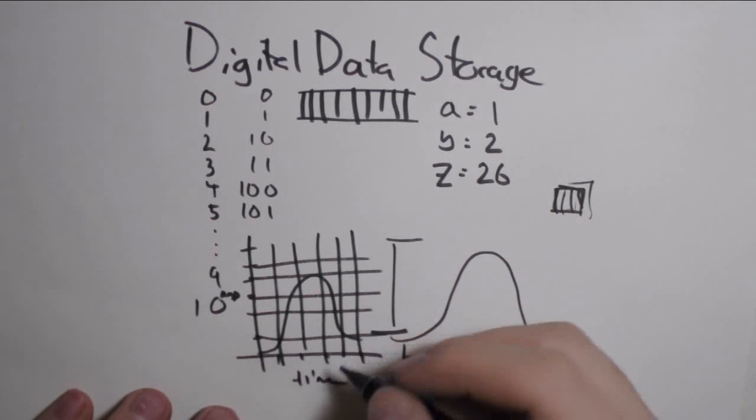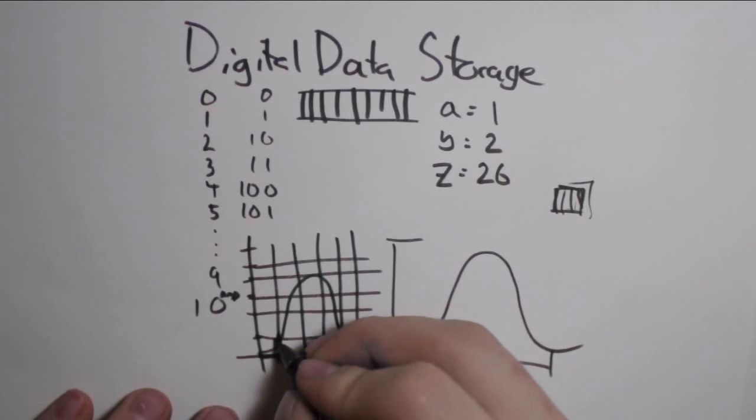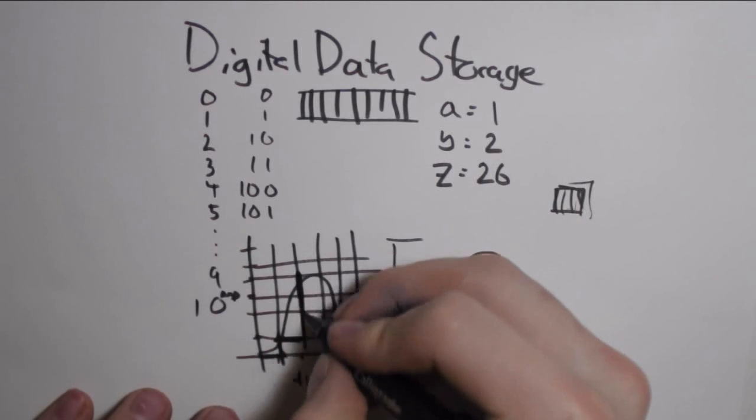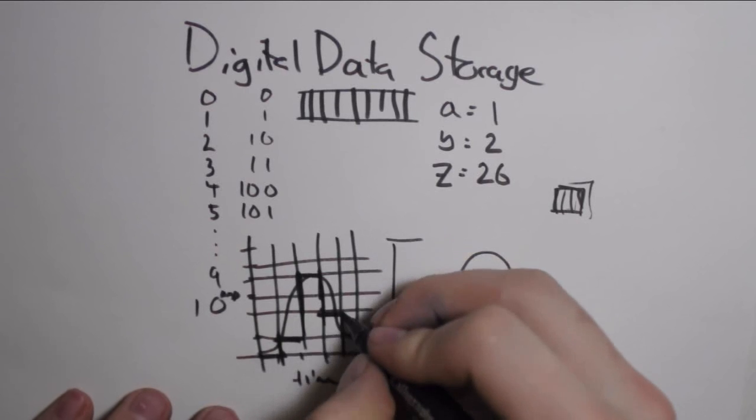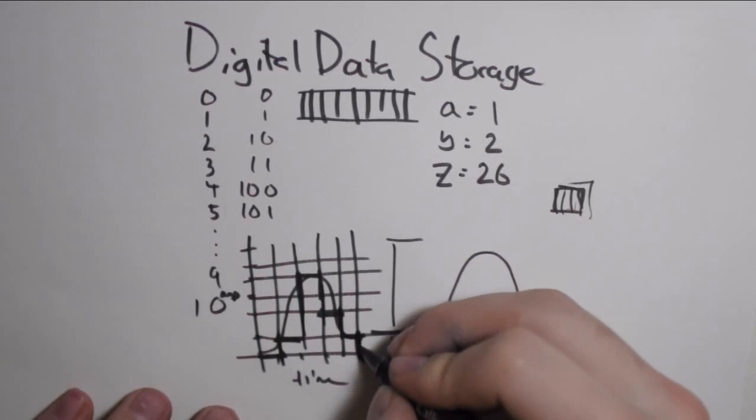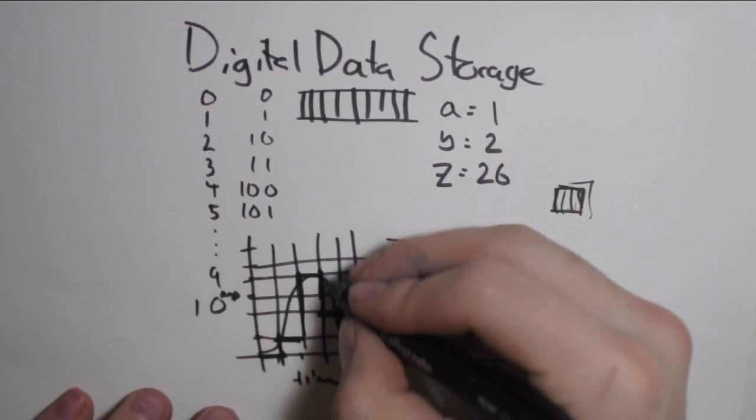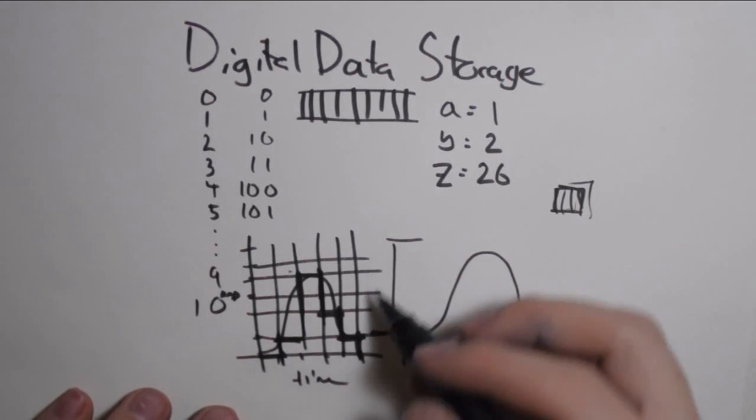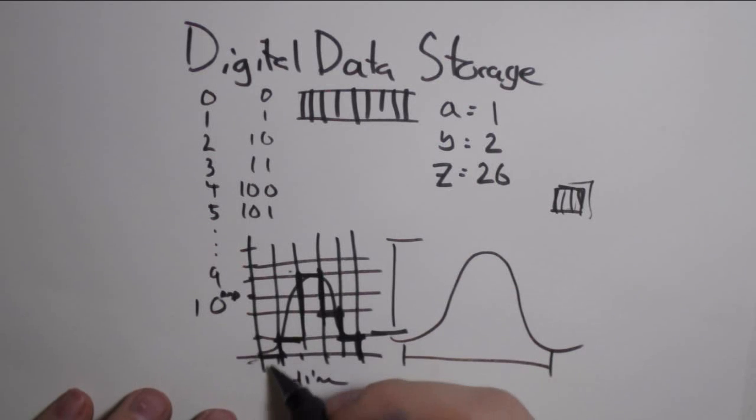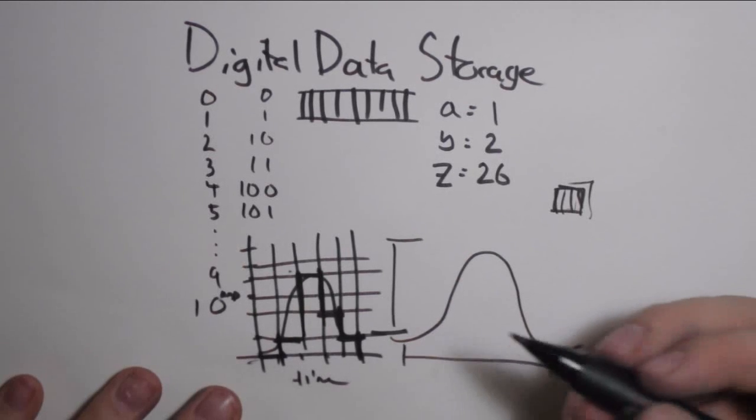It forms an approximation of it using this grid and then transmits that in terms of numbers, coordinates on a grid. And that's basically it.